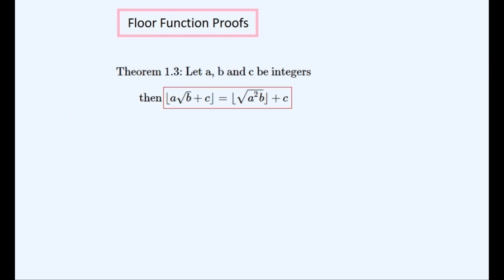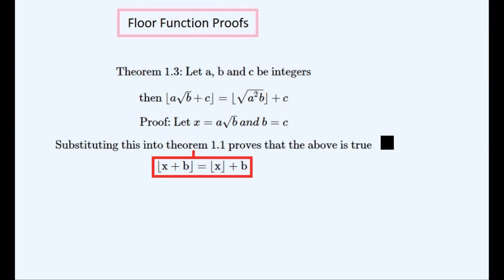And now to prove that this is true, you should be able to see that it is just a special case of theorem 1.1 where a real number is added to an integer, but we can write it out a bit more formally. We'll get ready to substitute it into theorem 1.1 by setting x equal to the real part and setting b equal to the integer part, and after substituting it in we can see that this theorem is also true.